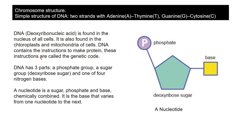DNA, although it's quite a complex molecule, is only made up of three parts: it has a phosphate group, a sugar called a deoxyribose sugar, and a type of molecule called a base. So there's a phosphate, a sugar, and a base. This structure is called a nucleotide. A nucleotide has a sugar, phosphate, and base. A DNA molecule is a long strand of these nucleotides connected together.